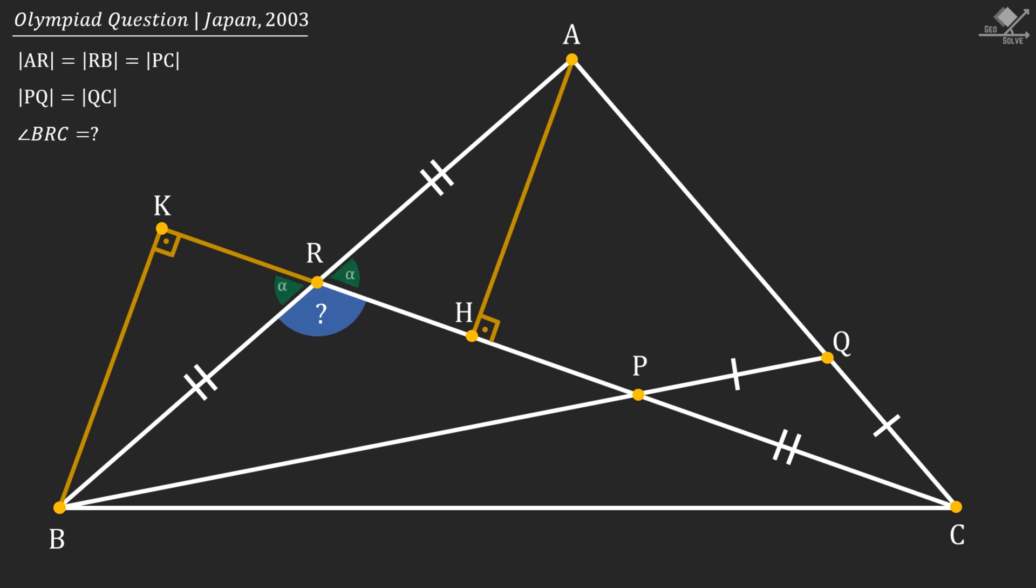Now let's call these two equal angles as alpha. Then these two angles will also be the same and let's call them beta.